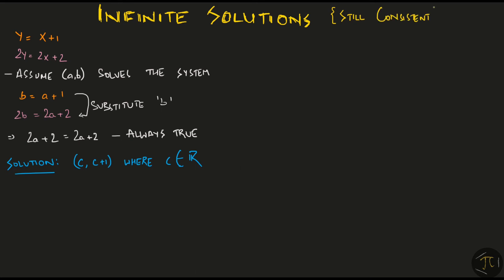It still is called a consistent system because at least the solution exists. Graphically, we have two equations representing two lines, but they are essentially the same line. So they have infinite common points.